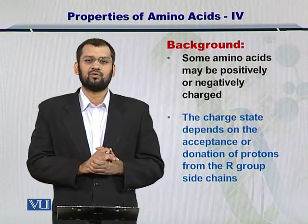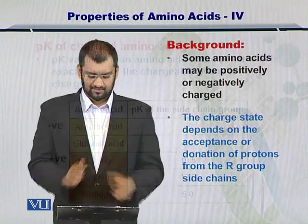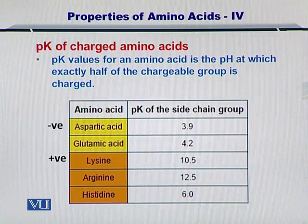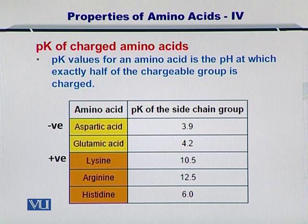That is how the overall charge of an amino acid can be determined. For that we need to understand the concept of pK value. The pK of charged amino acids is simply the pH at which half of the molecules of the amino acid are charged while the other half are not charged. The pK can be different for different amino acids.